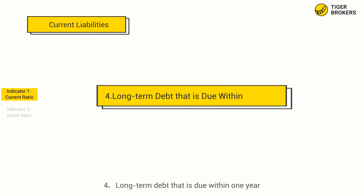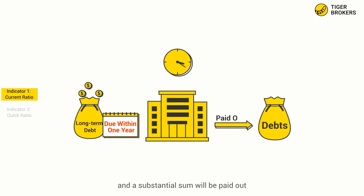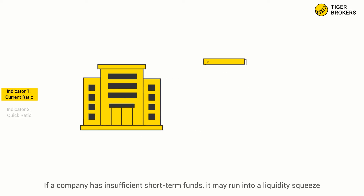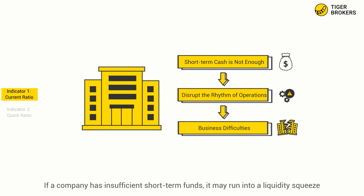4. Long-term Debt Due Within One Year. This means that a portion of a company's long-term debt is due within one year, and a substantial sum will be paid out. If the sum is extraordinarily high, we should be careful. If a company has insufficient short-term funds, it may run into a liquidity squeeze.